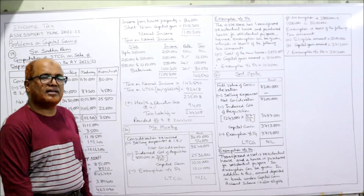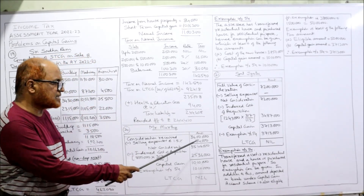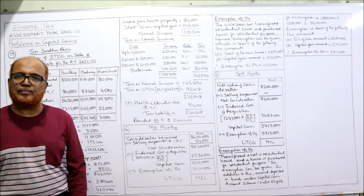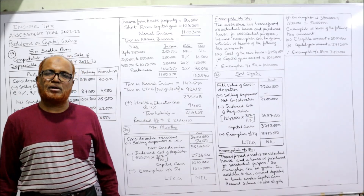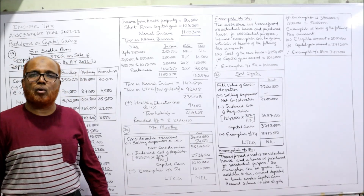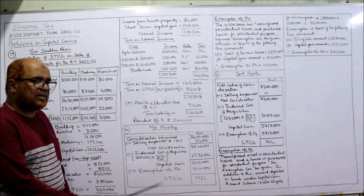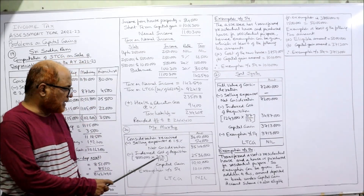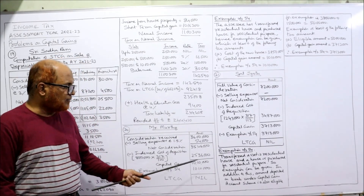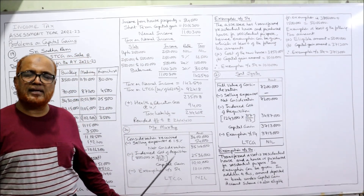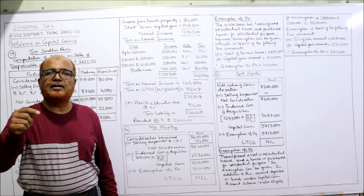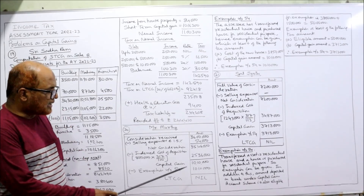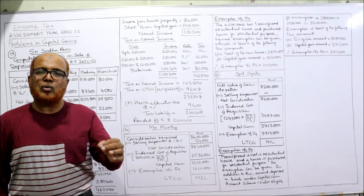Mr. Moorthy: consideration received ₹36 lakh. Selling expenses 1.5% of ₹36 lakh = ₹54,000. Net consideration: ₹35,46,000. Indexed cost of acquisition: ₹8 lakh purchased 16 years ago; current year CII 317, purchase year CII 100. So ₹8,00,000 × 317 ÷ 100 = ₹25,36,000. Net consideration minus indexed cost = capital gain of ₹10,10,000. Deduct exemption under Section 54 of ₹10,10,000. Long-term capital gain: nil.